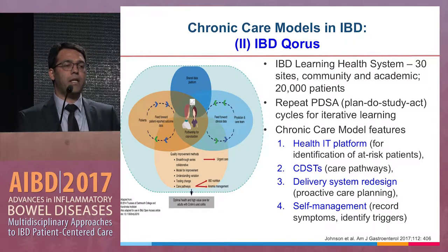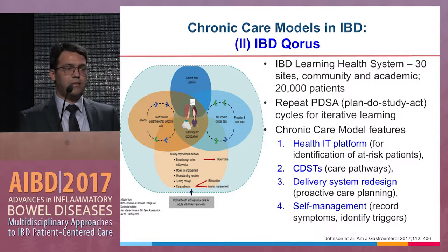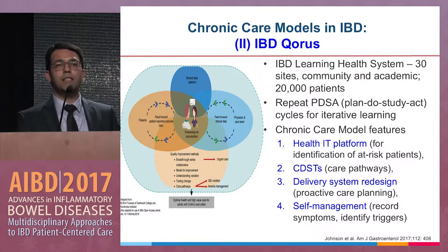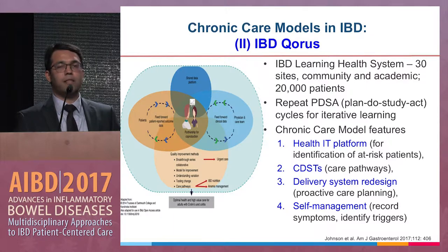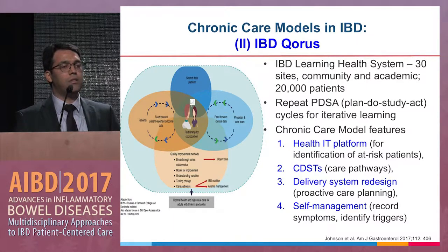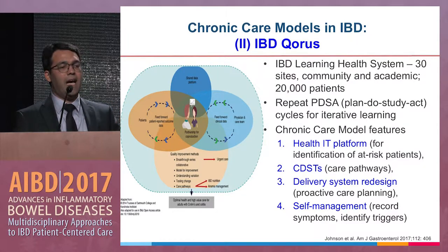Another example of a chronic care model is IBD Chorus, an IBD learning health system with about 30 sites — both community and academic — participating to engage 20,000 patients with repeat PDSA cycles for iterative learning and improving quality of care.